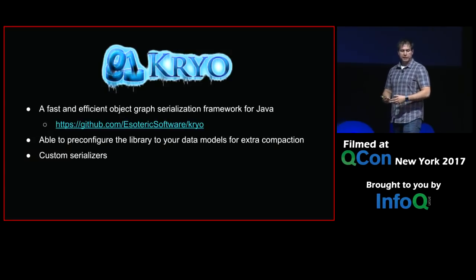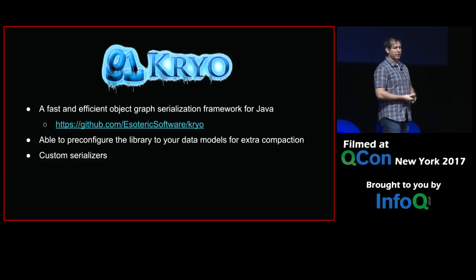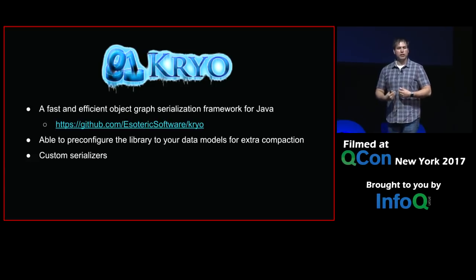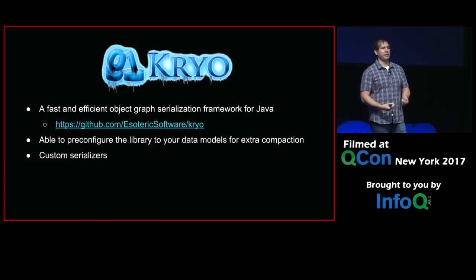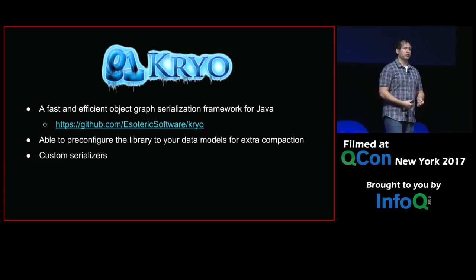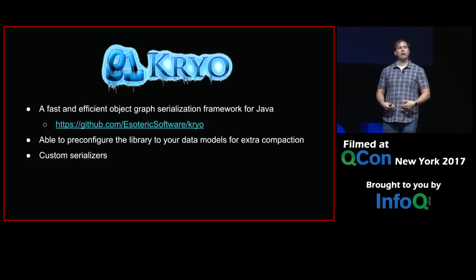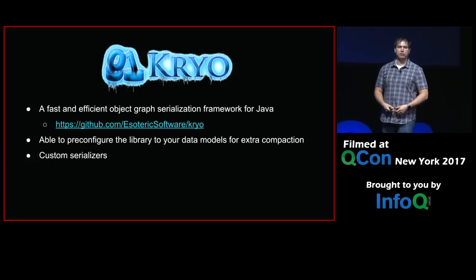We used Kryo as the serialization framework — it's open source. Out of the box it has a number of serializers that will probably be good enough for your requirements. For us, we had a requirement to version our events because, as noted, requirements change and we need to be able to change with them easily. We wanted to stamp our events with versions so that when we read in a version number, we know what values to expect in the serialized data. If a field isn't there, we provide a default value.